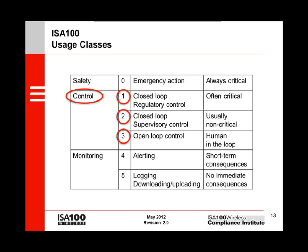ISA100 was designed to cover a wide range of applications summarized in the standard as application 0 through 5. The ISA100 usage classes are shown in this slide. The most critical application class is emergency action, numbered 0, shown at the top of the chart. The least critical application class is logging, numbered 5, shown at the bottom of the chart. In this presentation series, we will focus on control applications, classes 1, 2, and 3.